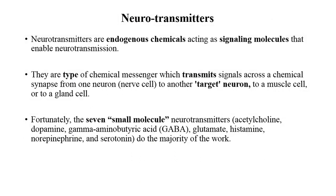Neurotransmitters are endogenous chemical substances released from vesicles that act as signaling molecules enabling transmission of signals across a chemical synapse from one neuron to another target neuron, muscle, or gland.